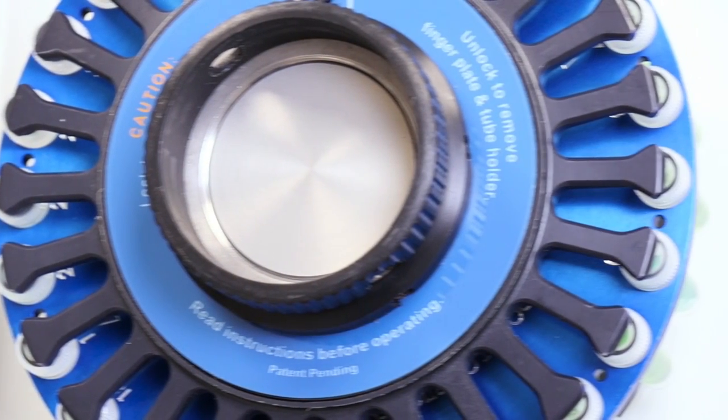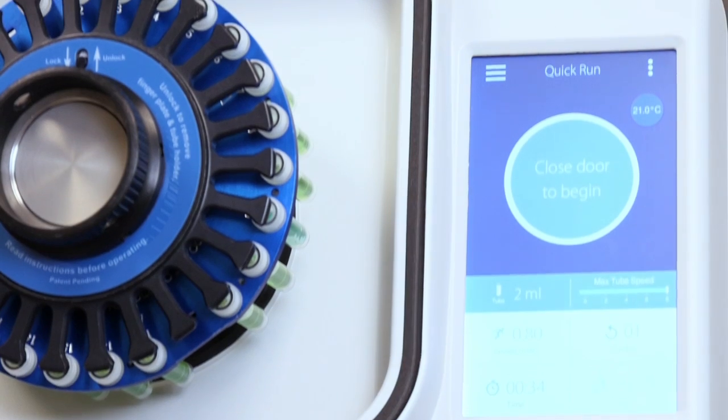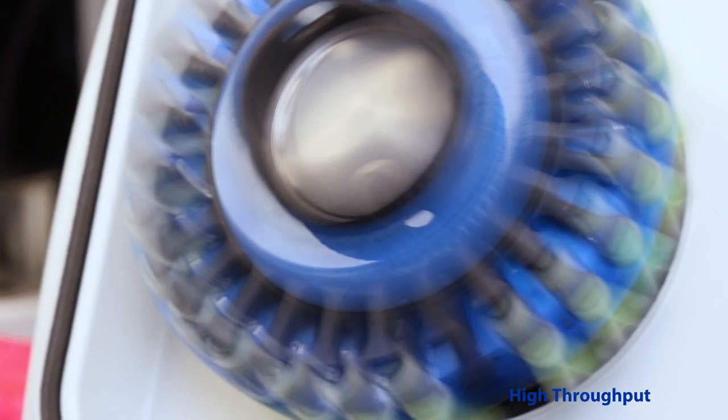The Omni Bead Ruptor Elite Bead Mill Homogenizer is the most advanced and powerful bead mill available. It is specifically designed for laboratories requiring high throughput sample disruption.